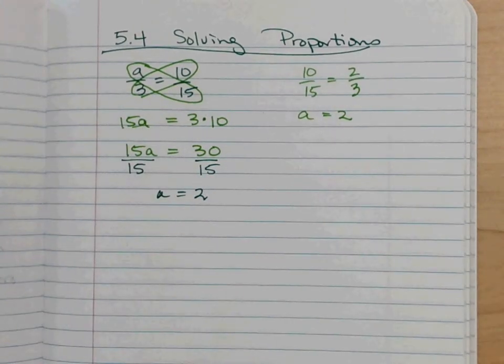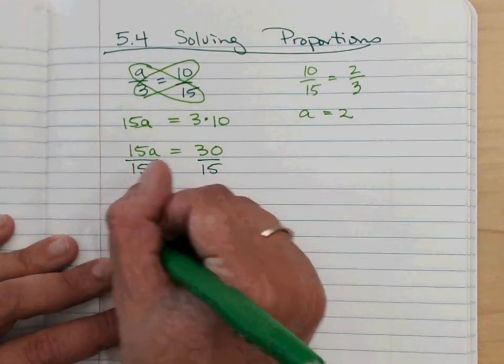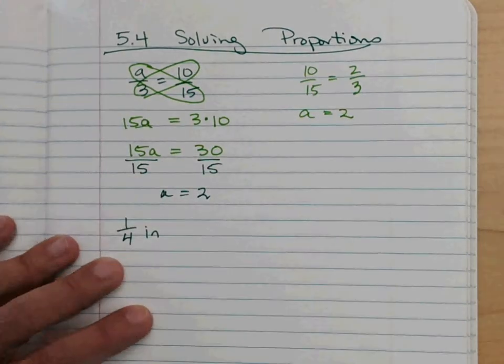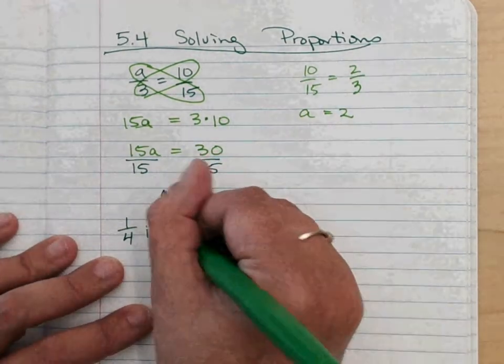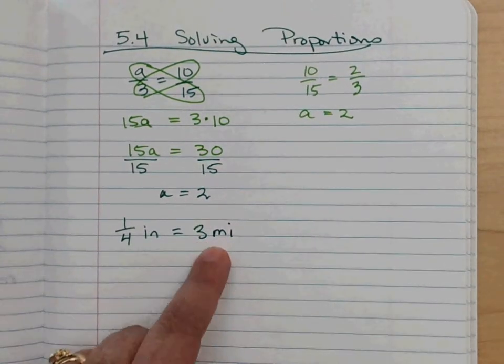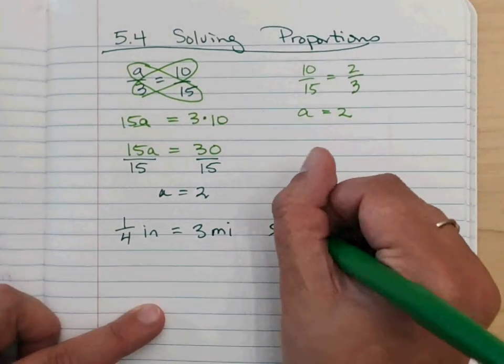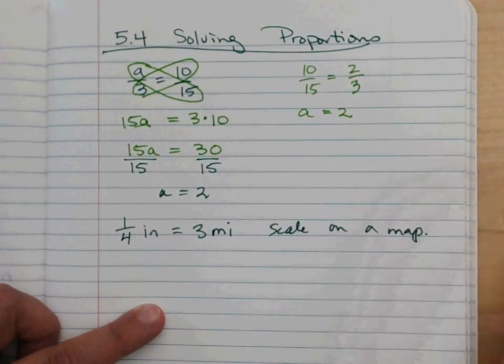Let's say I wanted to use a word problem. So a lot of these coming up are going to be some word problems here. A scale on a map is given that one fourth inch is equal to three miles. So when I have a map, I can't put three miles on the map. So I shrink it down. That's what we call scale. So this is the scale on a map.